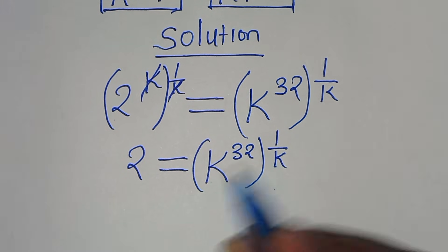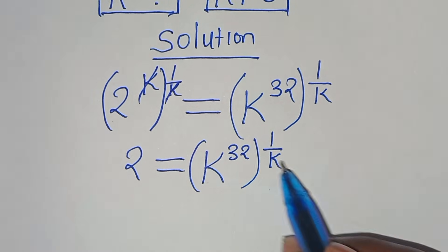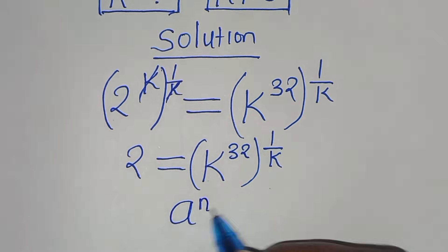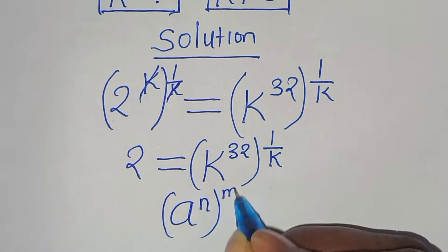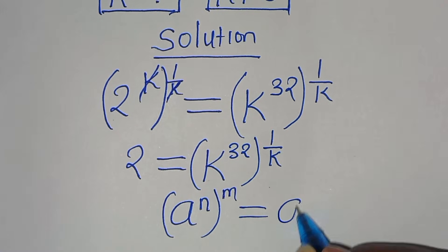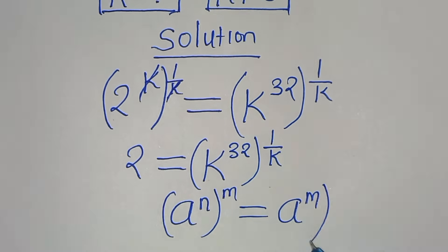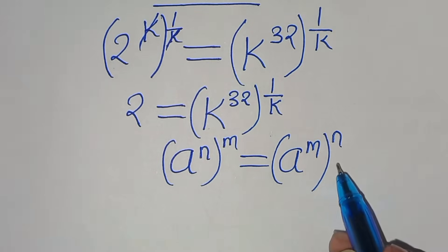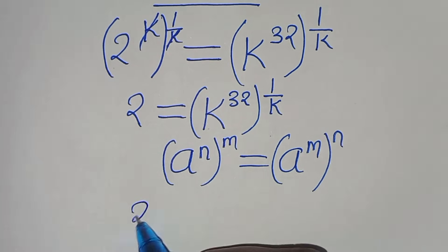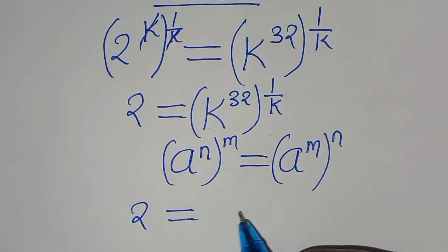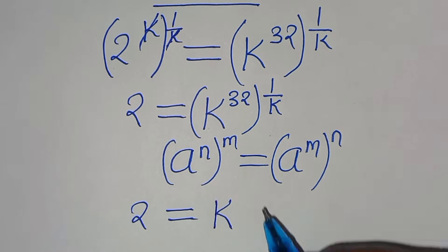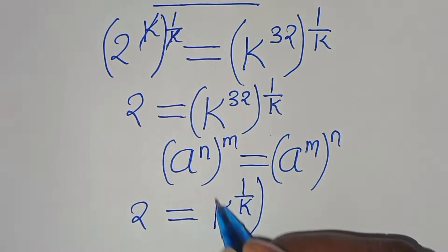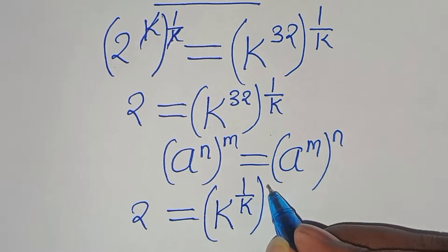Now, k to the power of 32 raised to the power of 1 over k is in the form of a to the power of n raised to the power of m, which we can express as a to the power of n times m. Applying this exponent property, we have 2 equals k to the power of 1 over k, raised to the power of 32.